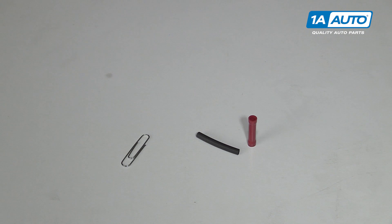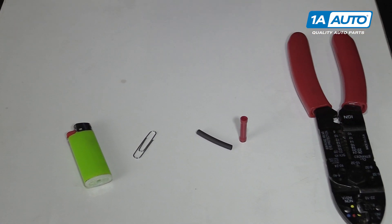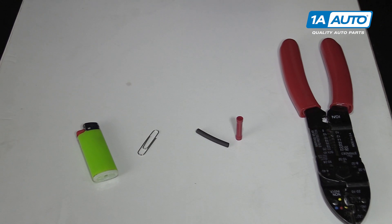You can't use the ones that have those little clear coatings or any kind of paint on them, they're not going to conduct and give you a proper reading. You'll also need a lighter or a heat gun and a pair of wiring crimp tools.